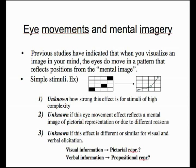It is also unknown if this eye movement effect reflects a mental image of pictorial representation or is due to different reasons. And it is also unknown if this effect is different or similar for visual and verbal elicitation. For example, would visual information create pictorial representations and verbal information create propositional representations? Or is it possible that verbal information could also create pictorial representations?